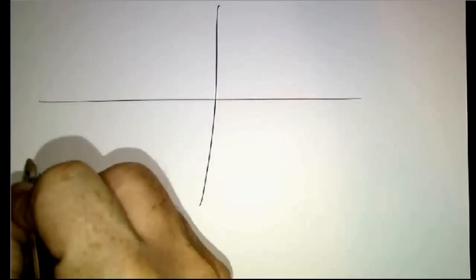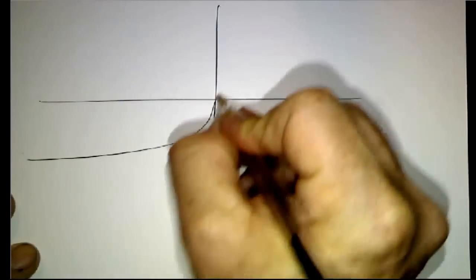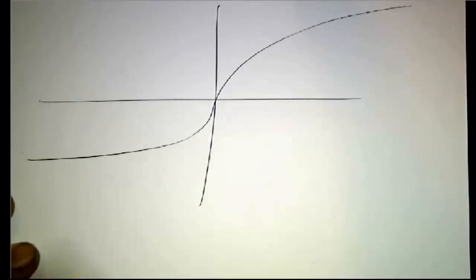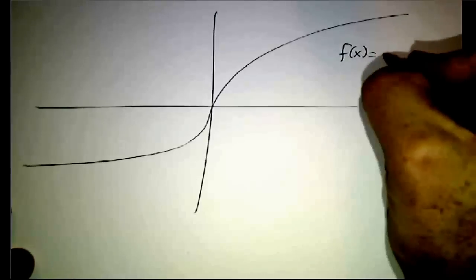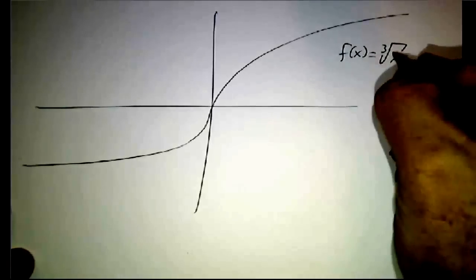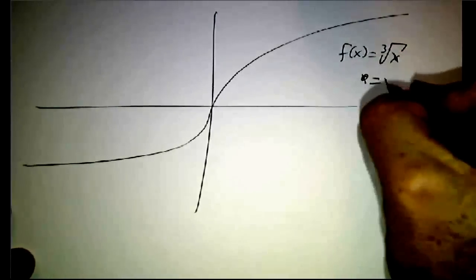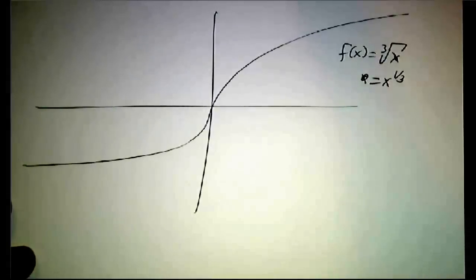The other problem with Newton's method is that sometimes even the function behaves badly. So this is the function. f is equal to the cube root of x. In other words, x to the one-third. And let's see what happens if we do Newton's method with that.